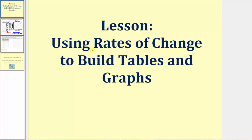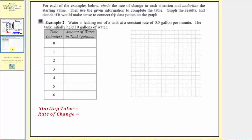Welcome to part two of the lesson on using rates of change to build tables and graphs. Just as in example one, we're asked to circle the rate of change in each situation and underline the starting value. Then use the given information to complete the table, graph the results, and decide if it would make sense to connect the data points on the graph.